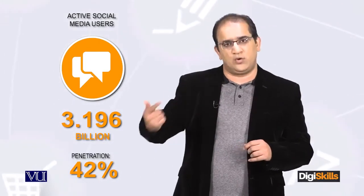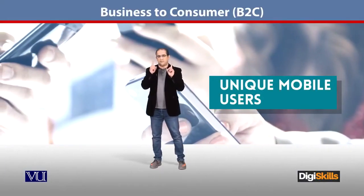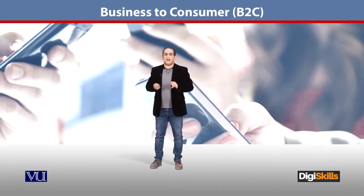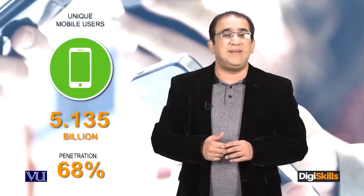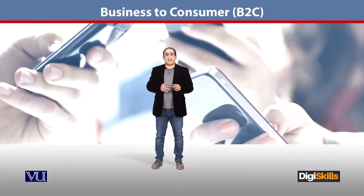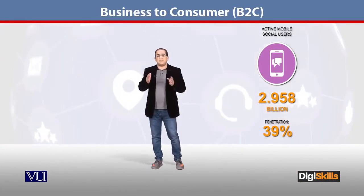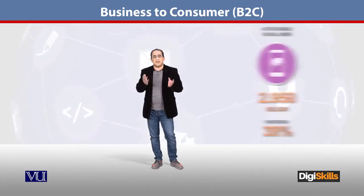— Snapchat and so on — are 3.1 billion users. I suggest that when you watch this course, please reconfirm these figures, as I am 200% sure they will have changed — there has been a very large increase. The social media penetration is 42%. Unique mobile users — those accessing the internet via mobile — are 5.1 billion, which is 68% penetration. And on social media, unique mobile users are 2.9 billion — 39% penetration globally.